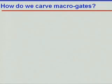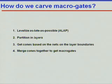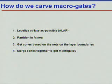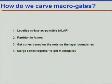How do we carve the micro gates? First, we levelize all the nets based on the as-late-as-possible scheme. Then we partition the levels into layers. Third, we get the cones based on the nets on the layer boundary. And last, we merge the cones together to get our micro gates.